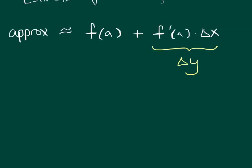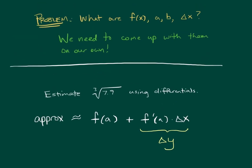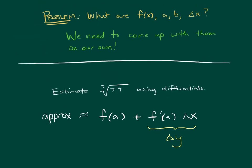But there's a problem here, and the problem is we don't know what f of x, a, and b, b, of course, refers to the thing that I'm approximating, f of b. We don't know what f of x, a, b, and delta x are. We have to come up with them on our own.